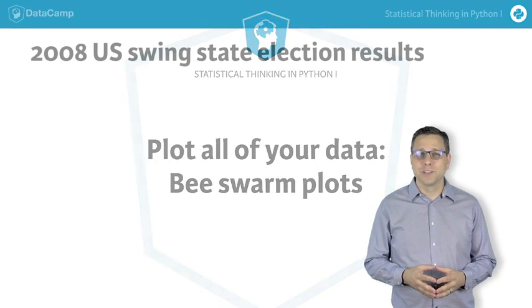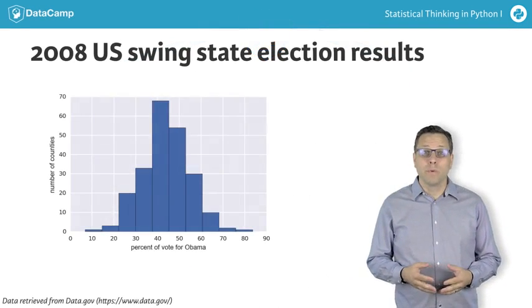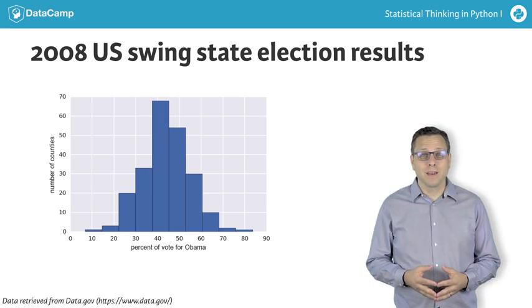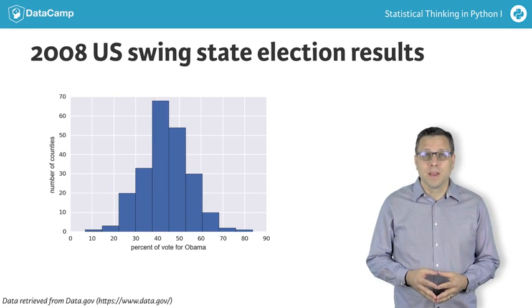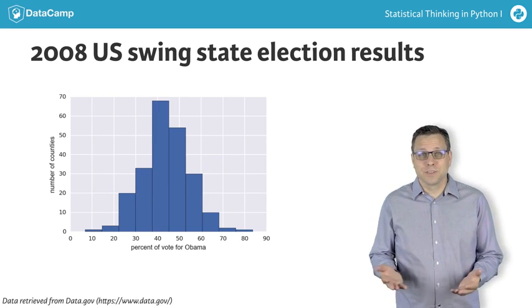The histogram of county-level election data was informative. We learned that more counties voted for McCain than for Obama. Since our goal is to learn from data, this is great!